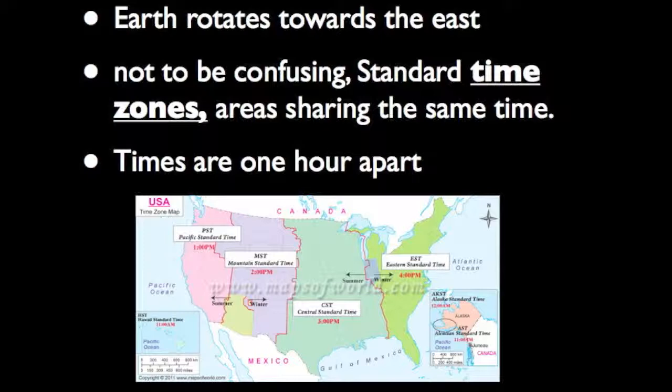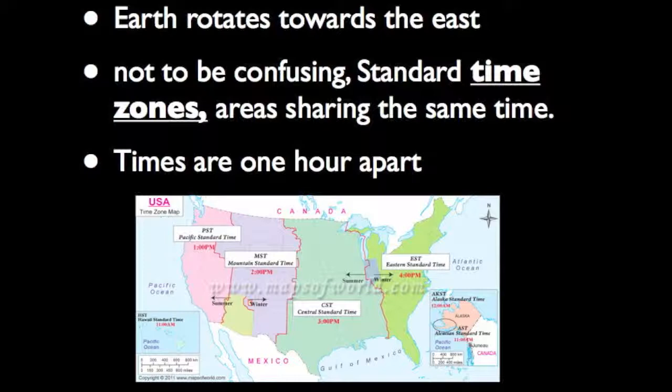Times in neighboring zones are one hour apart. The prime meridian in Greenwich, England, is at the center of one of these zones. The time in that zone is sometimes known as Greenwich Mean Time, or Universal Time. Other time zones are sometimes described in terms of how many hours they are behind or ahead of UT. For example, Central Standard Time in the United States is UT minus 6, or 6 hours behind UT.